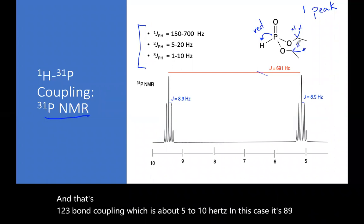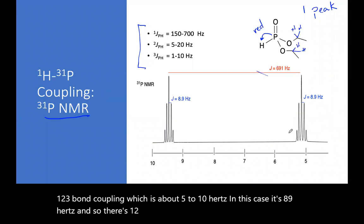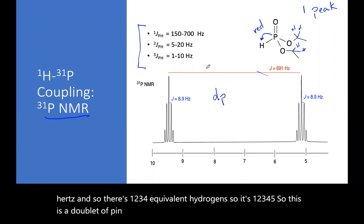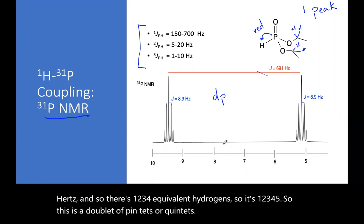And so there's one, two, three, four equivalent hydrogens. So it's one, two, three, four, five. So this is a doublet of pentets or quintets, because we're looking at that one phosphorus.